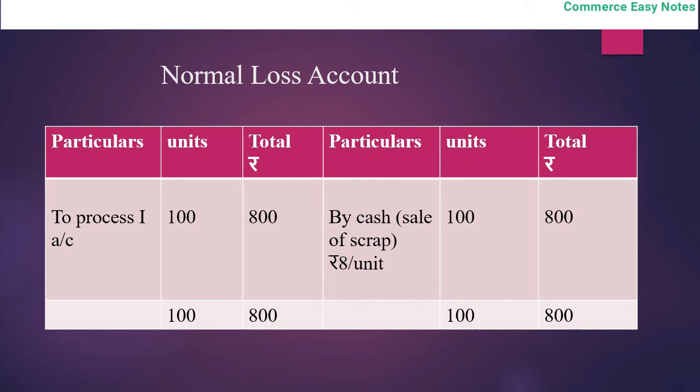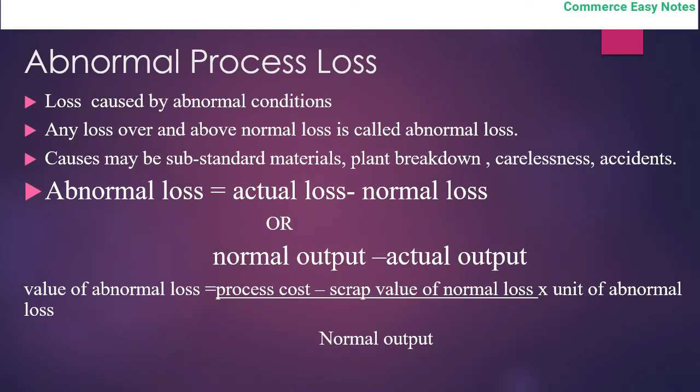Losses caused by abnormal conditions are termed as abnormal process loss. Any loss over and above the normal loss is called abnormal loss. It may be caused by substandard materials, plant breakdowns, or careless accidents. Abnormal loss = actual loss minus normal loss, or equivalently, normal output minus actual output.